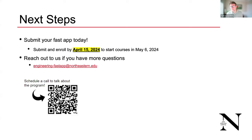Next steps: the deadline to join for summer is April 15th, with classes starting May 6th. The next opportunity after that is the fall semester. We have an email address — engineering-fastapp@northeastern.edu — for admissions questions, and you can use the QR code to set up a call directly with Tom from Coursera to discuss the program in more detail.